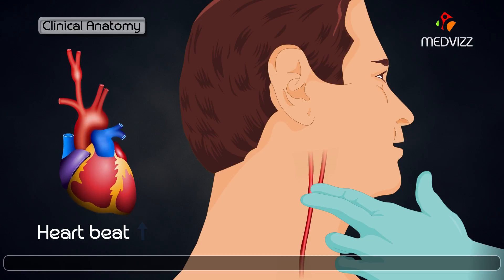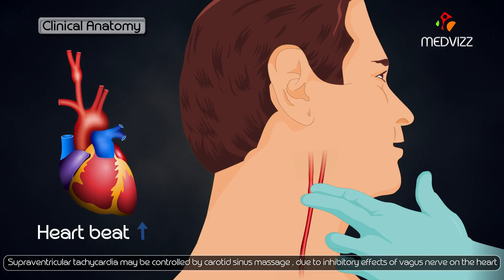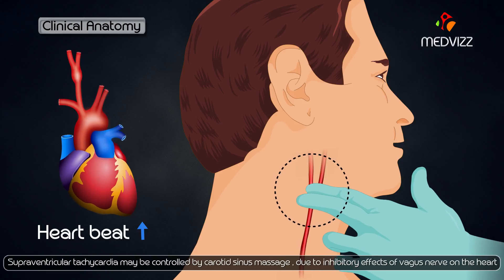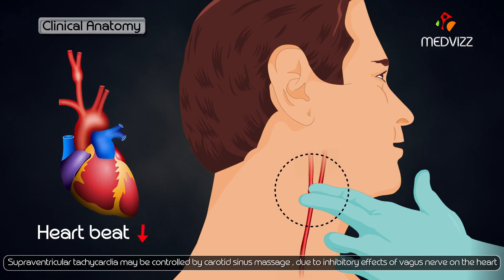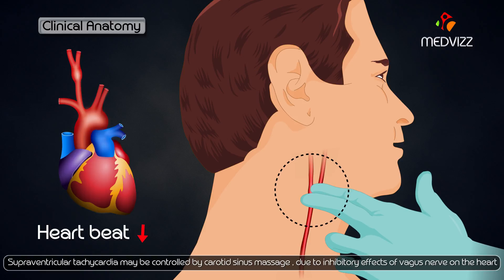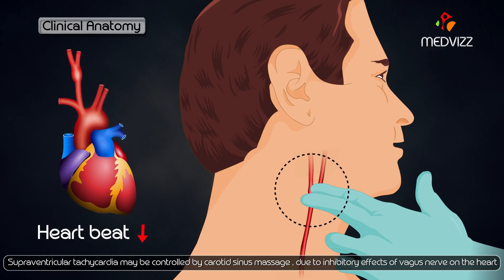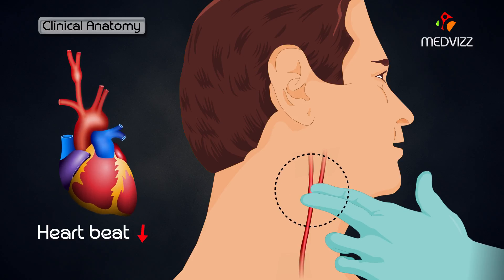In cases of supraventricular tachycardia, it may be controlled by a gentle carotid sinus massage, especially because of inhibitory signals from the vagus nerve on the heart. With this, we have completed the discussion of the carotid body as well as the carotid sinus.